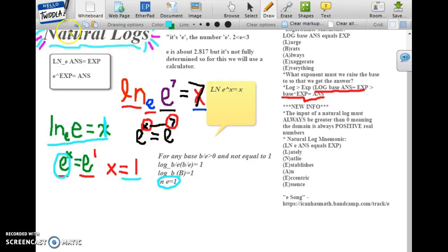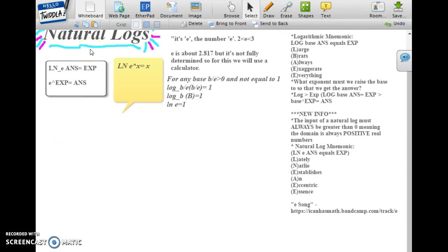A natural log converts into an exponent the same way a common log does. The log with the base of b, this answer equals the exponent, and then the base risen to the exponent equals the answer. Same thing with a natural log: e to the power of the exponent equals the answer.